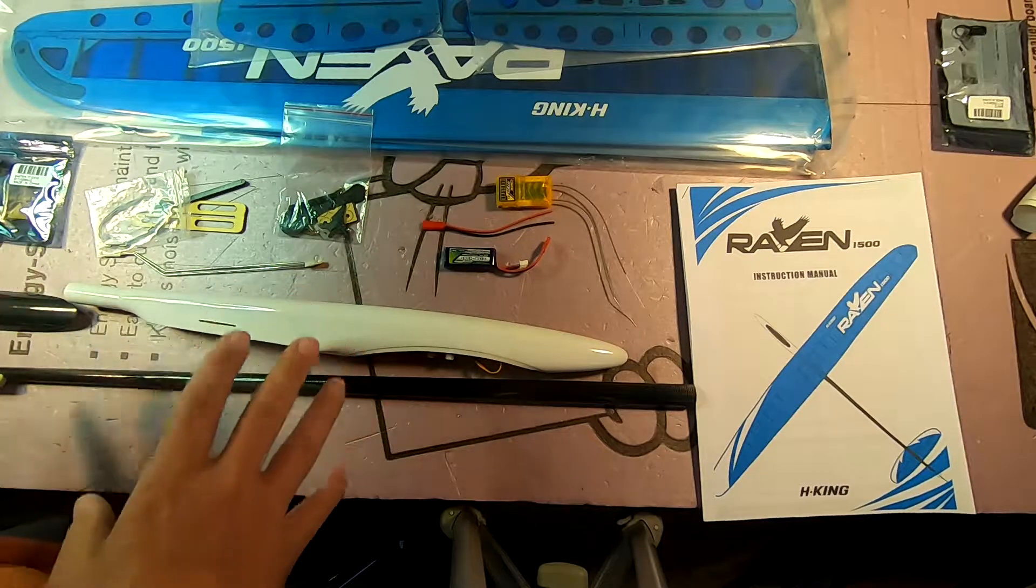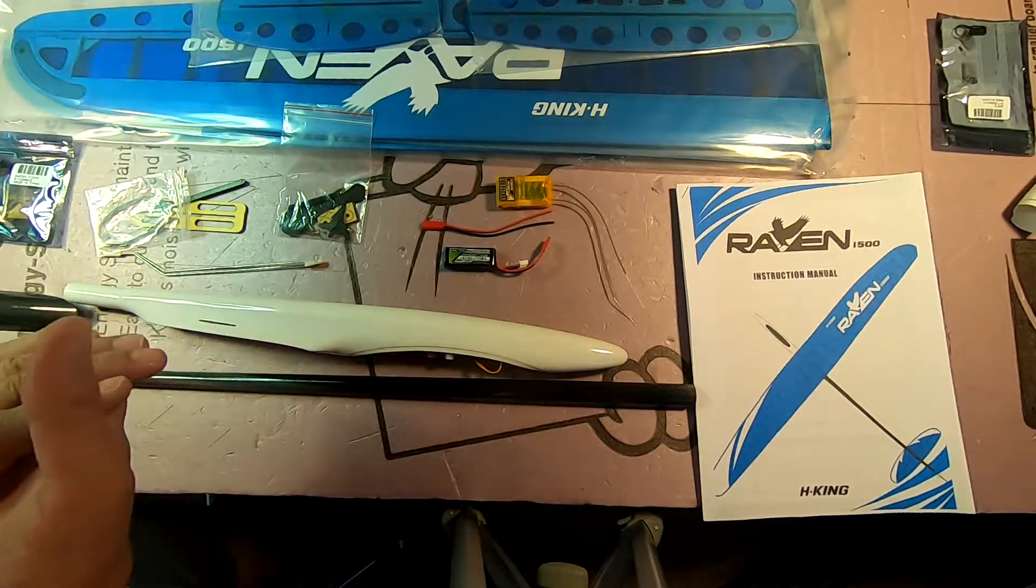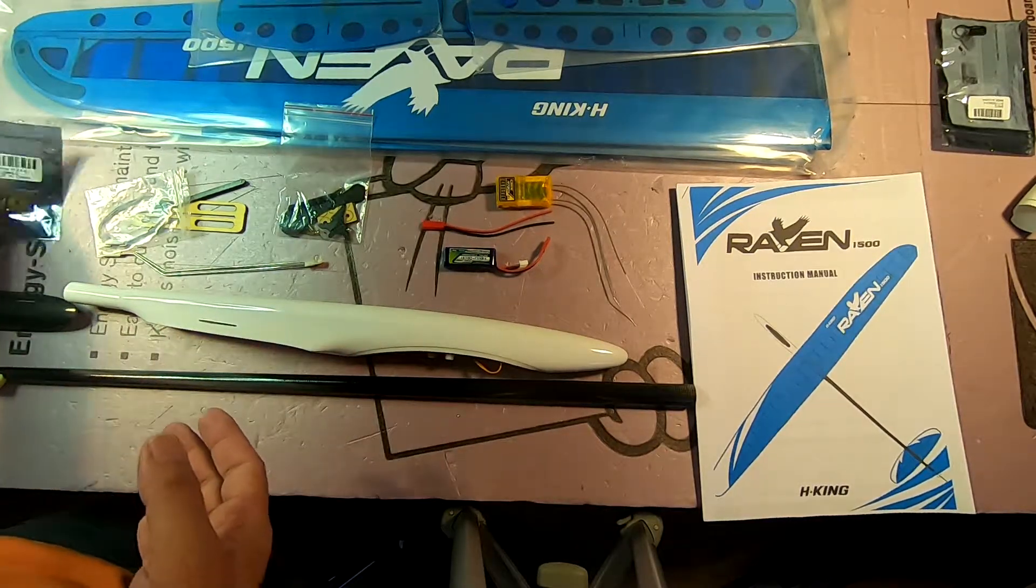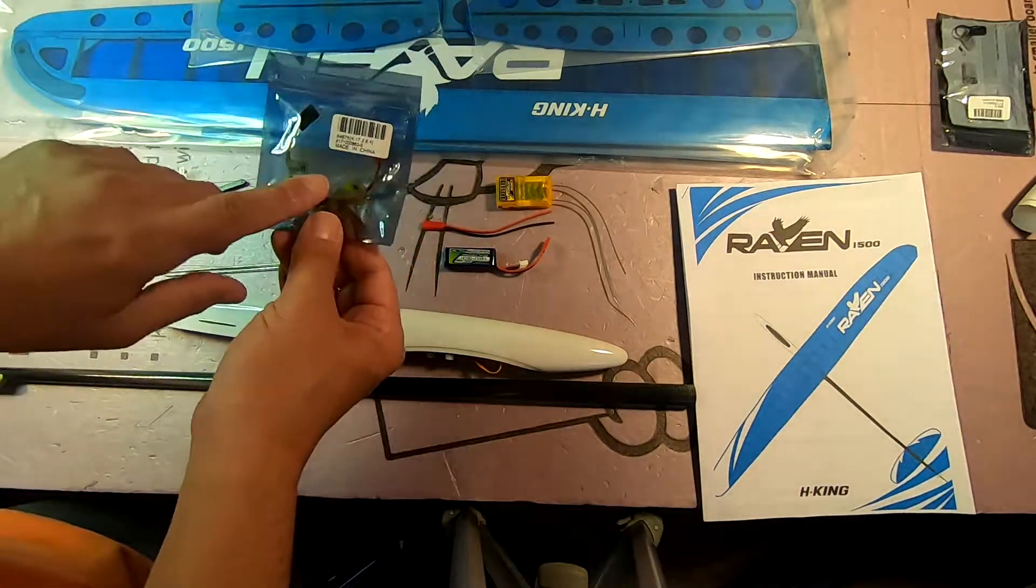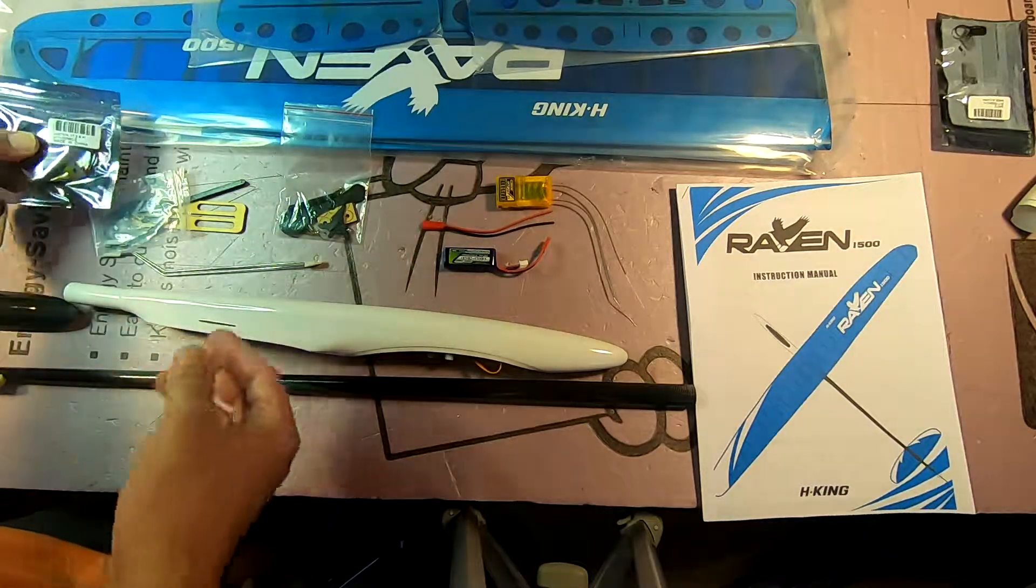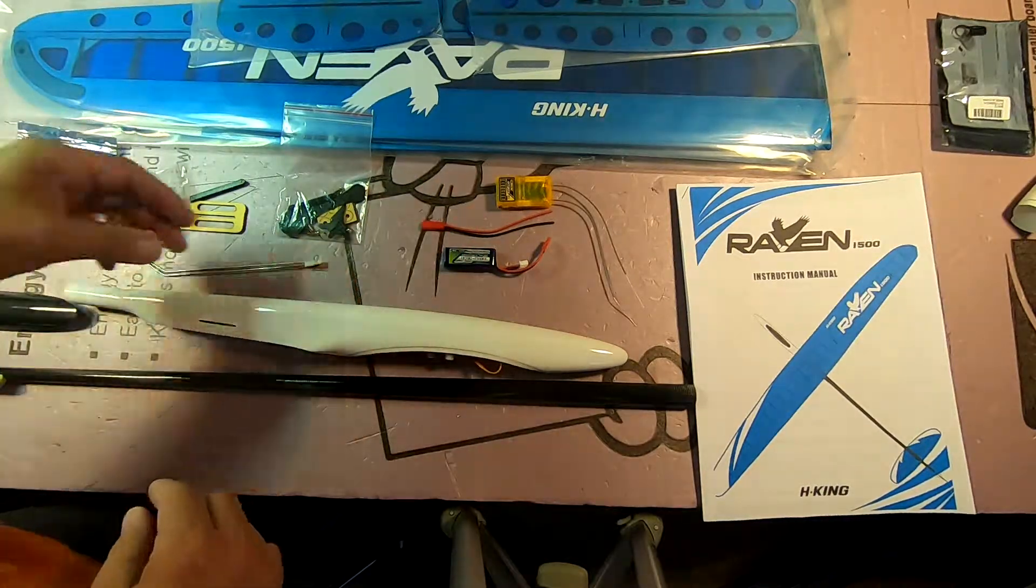Okay, just laying things out, making sure I've got everything I need. You don't need a lot to assemble this. It even comes with a BEC, so you've got power for the radio from a LiPo.